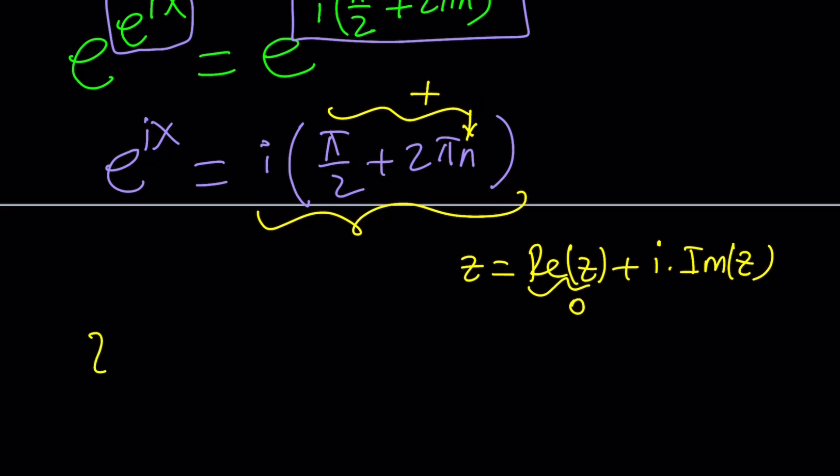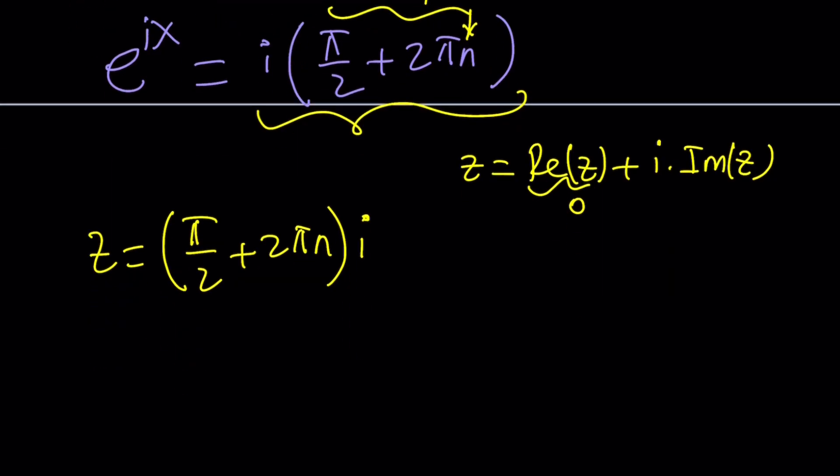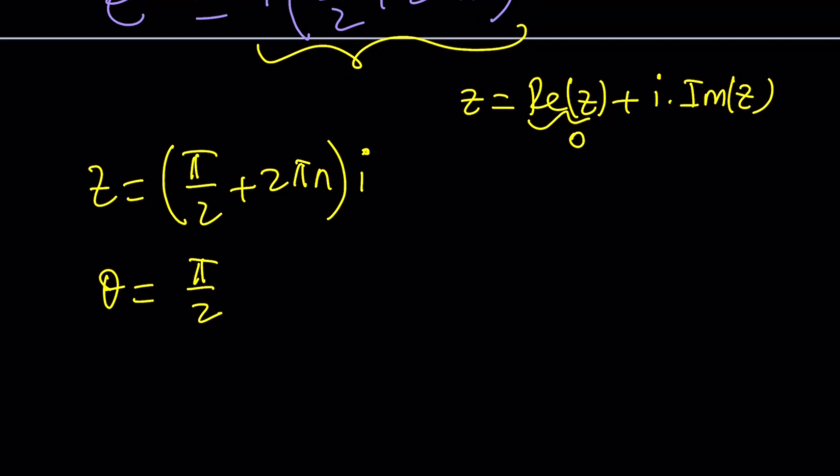If z is equal to π over 2 plus 2πn multiplied by i, then theta is going to be π over 2 again, just like i. But what about the modulus? Well, the modulus is just going to be the absolute value of the coefficient of i, which is π over 2 plus 2πn. So now we can go ahead and write our number as follows.